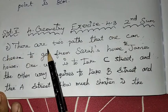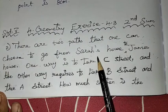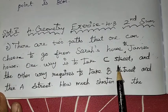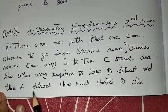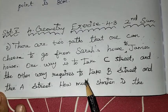In the problem, there are two paths that one can choose to go from Sarah's house to James' house. One way is to take C Street and the other way requires to take B Street and then A Street. How much shorter is the direct path along C Street?